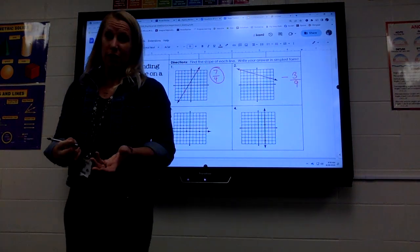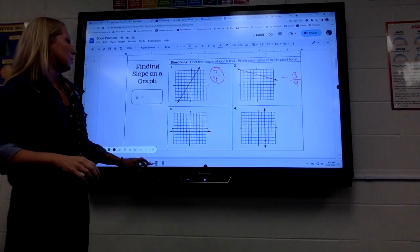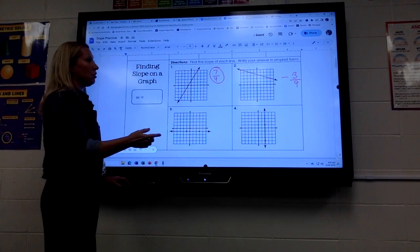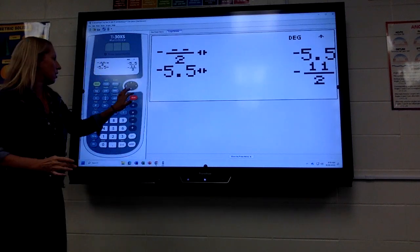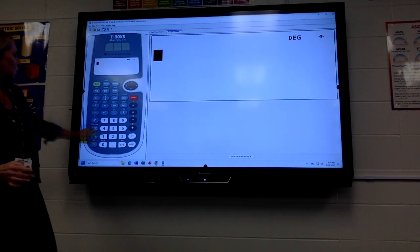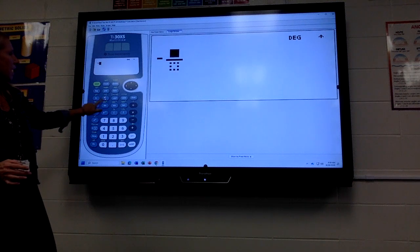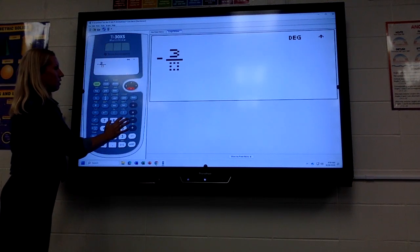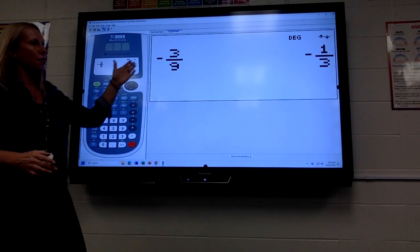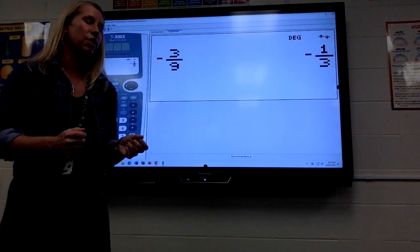Now, that reduces, because 3 goes into 9. So if you need to know how to reduce, let me show you how to do that. So in your calculator, you do negative, and then that N over D button gives you the fraction, 3 over 9, hit enter, and it reduces it for you. So negative 1 third.